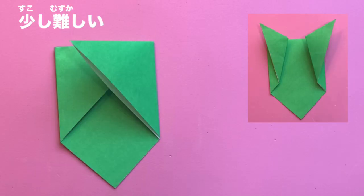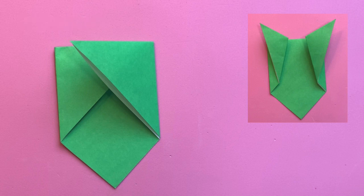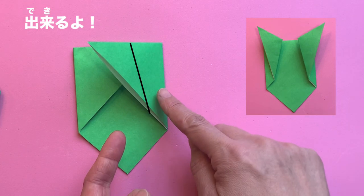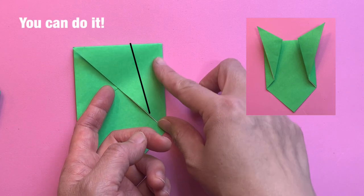This part is a little hard, sukoshi muzukashii. Fold on the black line, kuroi sen no tokoro de oru. You can do it, dekiru yo!